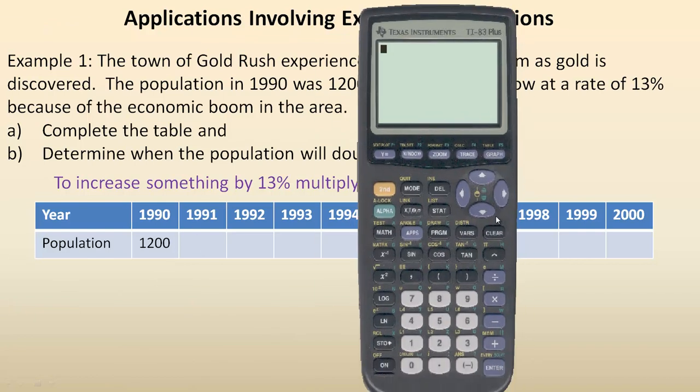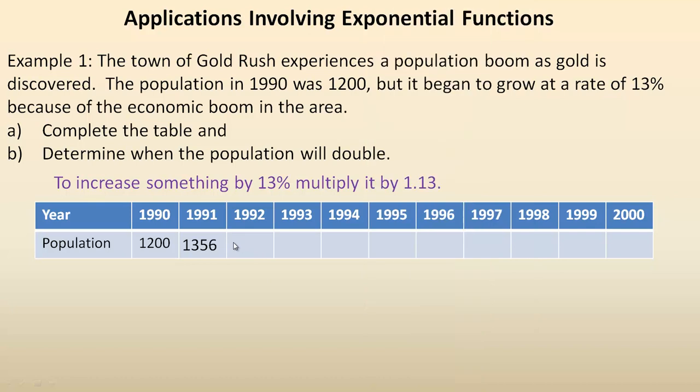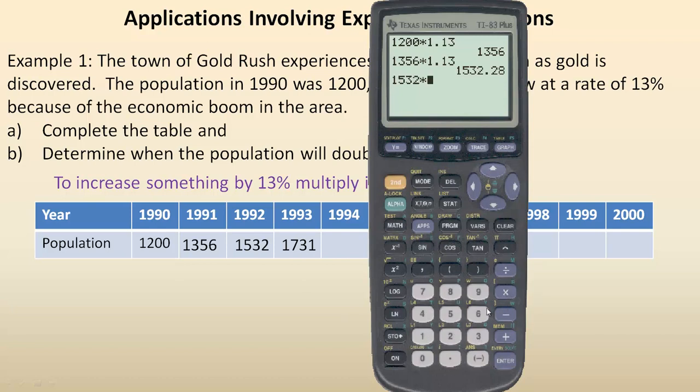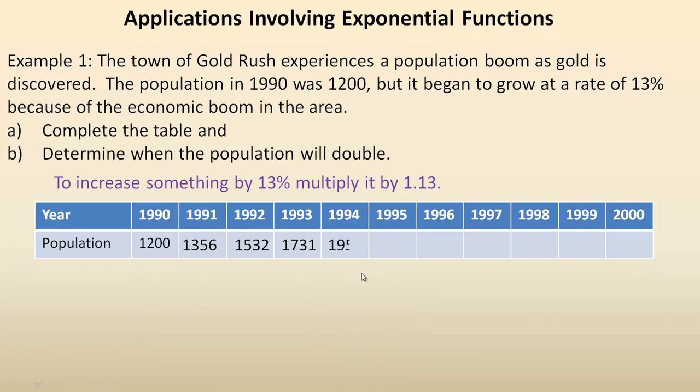If I take my calculator and go 1200 times 1.13, that's 1,356. Then 1,356 times 1.13 gives 1,532 for 1992. I'm rounding to the nearest whole number since we can't have 0.28 of a person. For 1993, this is 1731 because if we take 1532 and multiply by 1.13, we get 1731. We just keep rounding to the nearest whole number and multiplying by 1.13.